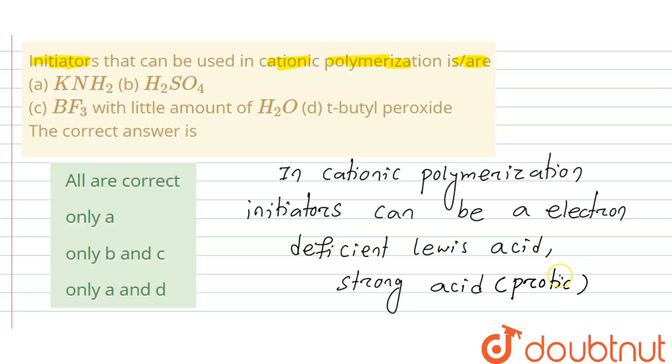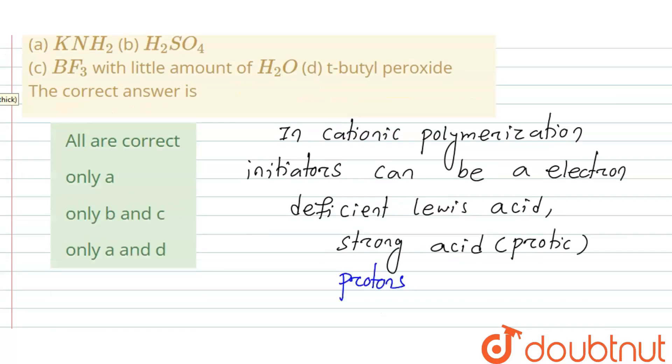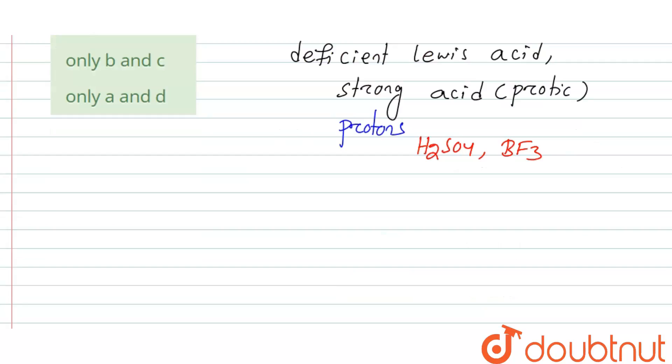Protic means which can donate protons. Therefore it is called a strong acid. In cationic polymerization, initiators can be electron deficient Lewis acids or strong acids like H₂SO₄, BF₃, and AlCl₃.